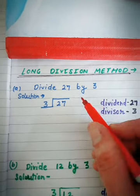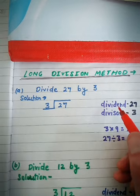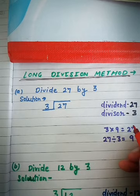Question number a, 27 by 3. 27 is the dividend and 3 is the divisor.